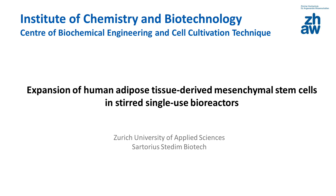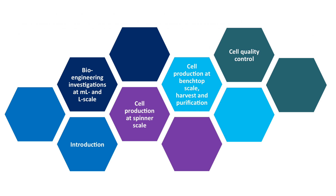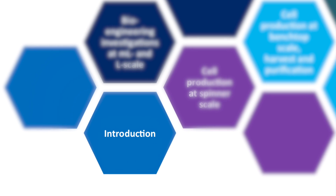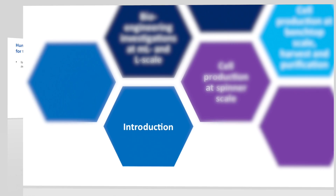Welcome to our e-learning video series about the expansion of human mesenchymal stem cells in stirred bioreactors, specifically those derived from human adipose tissue. We want to show you an approach which allows rapid process transfer from milliliter to benchtop scale using small spherical particles, so-called microcarriers. In the video, we give you an overview of the main steps. Let's start with a short introduction.